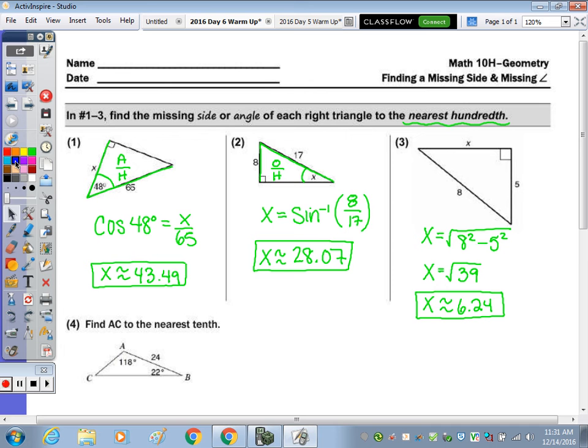x was approximately 43.49. In number 2, given the two sides to find the angle, you had to use the sine ratio. And on the calculator, remember, anytime you're wanting to find the angle, you have to use the inverse sine button.